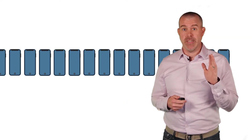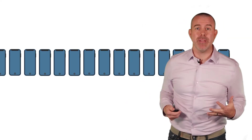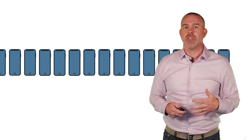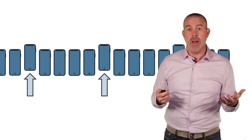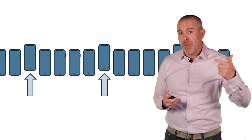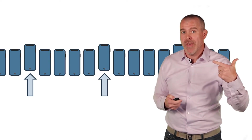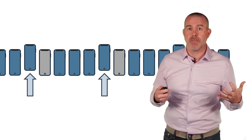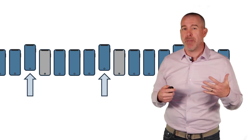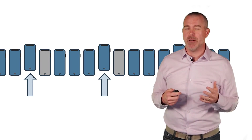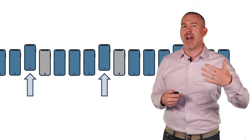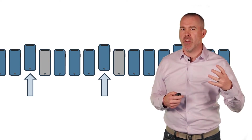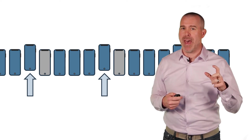There is a weakness to systematic sampling. Suppose you have an assembly line producing cell phones and you select every fifth one. If there's a problem in the process that also occurs every fifth item, you'll miss them all and think everything is perfect. So if there's some kind of pattern in the production process, you need to make sure you're not selecting in that same pattern.